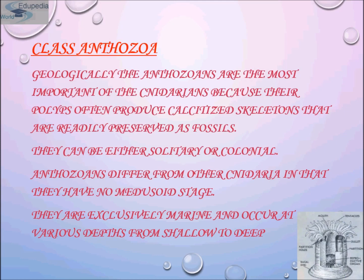They occur at various depths from shallow to deep water. This is the representation of class Anthozoa — a sea anemone. These are its tentacles, this is the mouth, this is the partition wall, this is the basal disc through which it attaches to the substratum, and these are the reproductive organs or gonads.